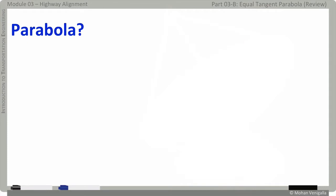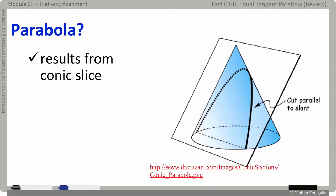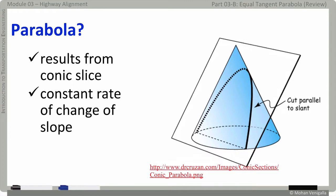First, what is a parabola? You may recall from your engineering drawing course, it's a geometric curve that results from slicing a cone like this. The beauty of the curve is that it provides constant rate of change of slope. The equation of parabola is Y equals AX squared plus BX plus C.